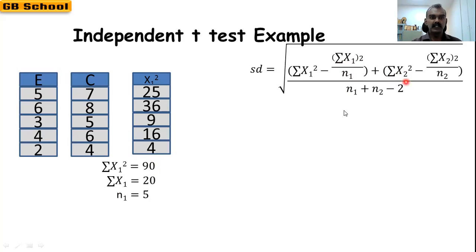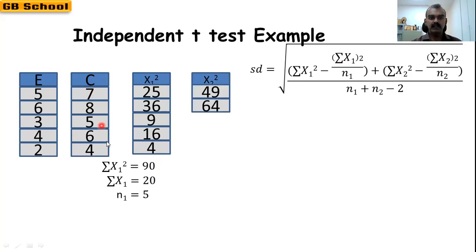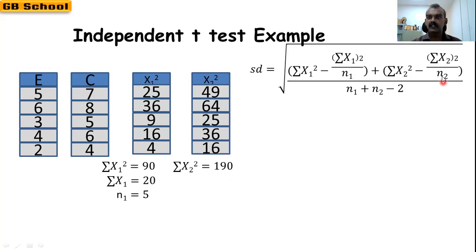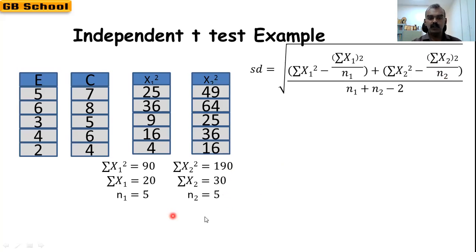Next, we find the sum of x₂ squared. Squaring each x₂ value: 7² = 49, 8² = 64, 5² = 25, 6² = 36, 4² = 16. Adding these gives the sum of x₂² = 190. We already know the sum of x₂ = 30 and n₂ = 5.